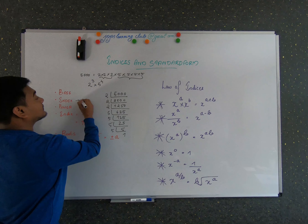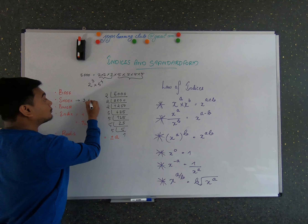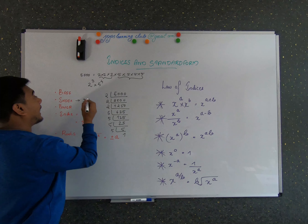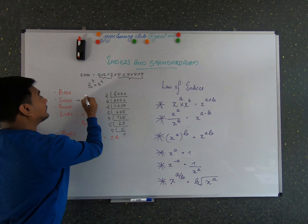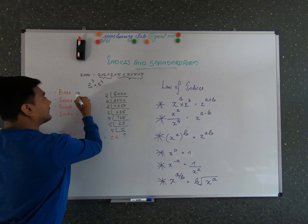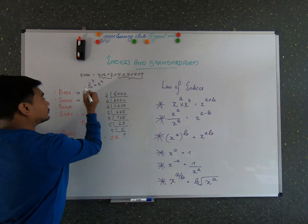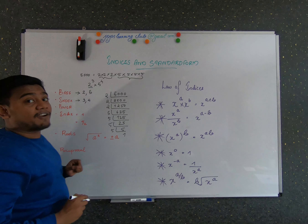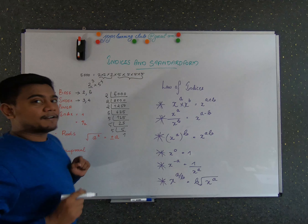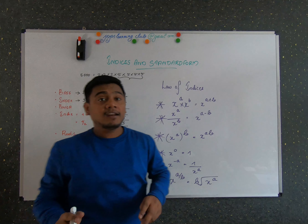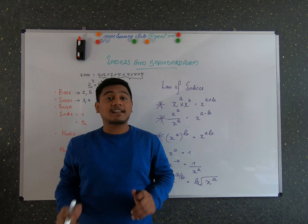Index numbers are nothing but the 'raised to power' which is written for a number. The number written at the base is known as the base number — here 2 and 5 are the base numbers. A power is when a number is raised to an integer.